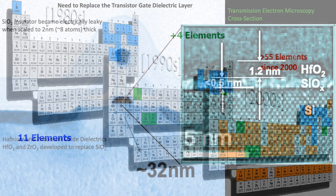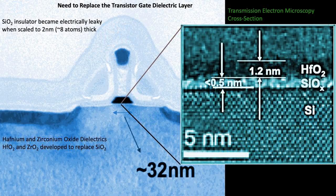Devices are built on and into silicon crystal wafers, thin glass-like discs. Consider the transistor gate dielectric, a thin insulator made of silicon and oxygen, but not quite the same as the quartz crystal grains of sand. This non-crystalline, amorphous silicon oxide has no unit cell and no long-range order. When it was thinned down to two nanometers, about eight atoms thick, electrons began to migrate through it. The COVID-19 virus is 40 times larger.